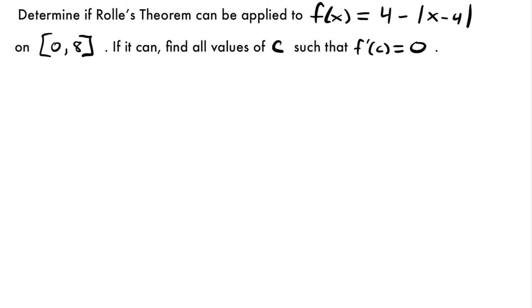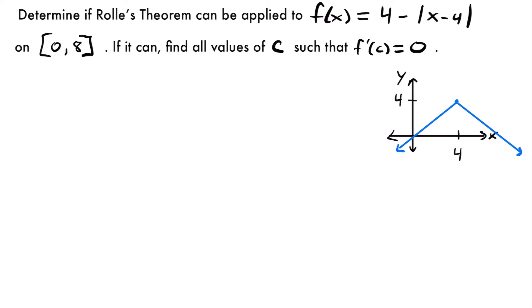If we were to graph this function, we'd see a vertex shape with a non-differentiable point at x = 4. To identify this without graphing, just look at what's inside the absolute value: x - 4. Whatever makes that expression equal to 0 — in this case x = 4 — is where the function is not differentiable.